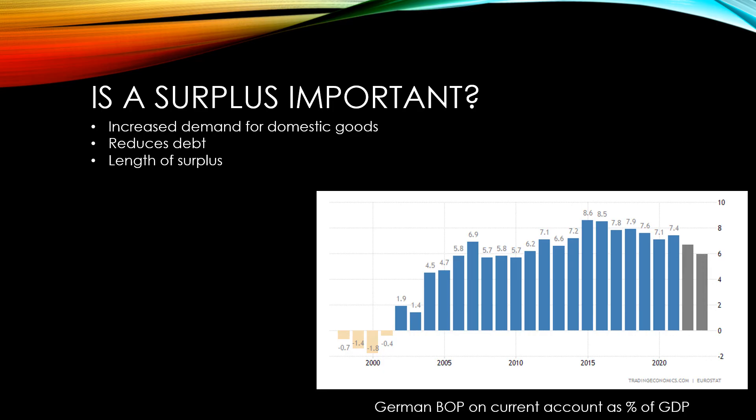As a surplus means increased demand for the domestic economy, this can put upward pressure on prices and lead to demand-pull inflation. With more exports, there is a greater demand for the domestic currency. With fewer imports, there is less reason to sell it. This leads to an overall increase in the exchange rate.